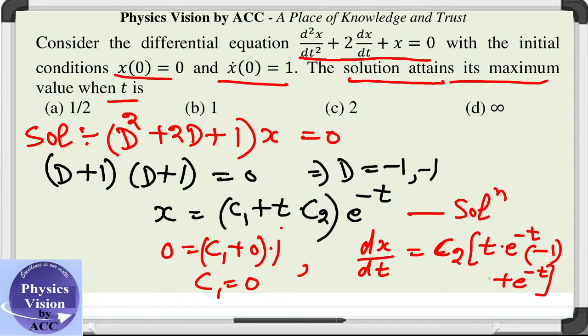When we put t = 0 and dx/dt = 1, the first term becomes 0 and the second term becomes 1, so c₂ = 1.